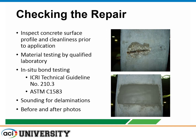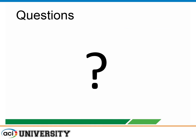Once the repair is completed, document it — before and after photos. You can never have enough pictures, both for documentation and for the marketing department. Sometimes a qualified independent laboratory will test the materials themselves. Another quality control method is bond testing using an ICRI and ASTM direct tensile pull-off test on the repair material. One of the simpler things is to go back and do a sounding of your patch to check for any delaminations or hollow spots that need to be addressed.